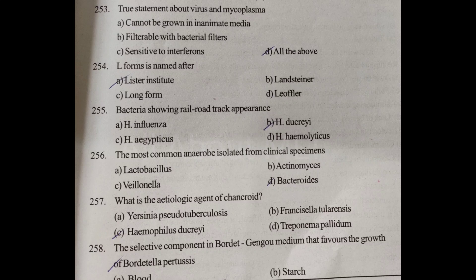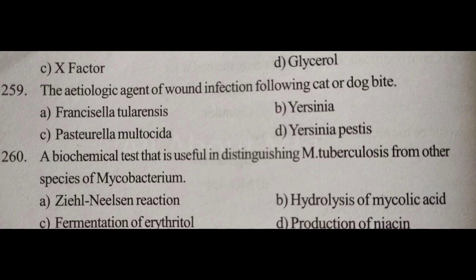The selective component in Bordet-Gengou medium that favours the growth of Bordetella pertussis. Option A: Blood. Option B: Starch. Option C: X-factor. Option D: Glycerol. Answer is Option A: Blood.